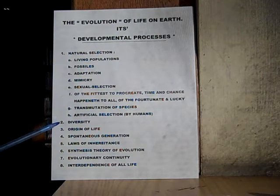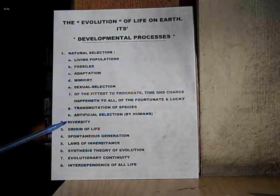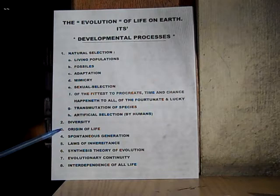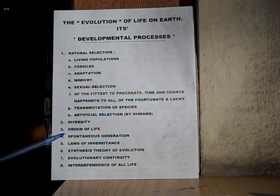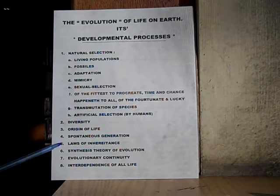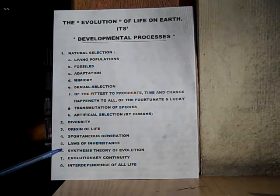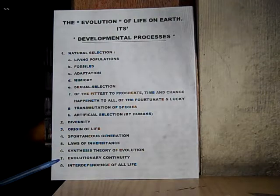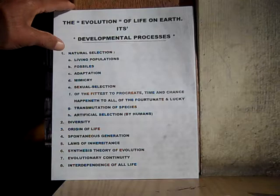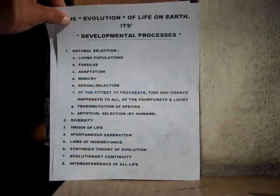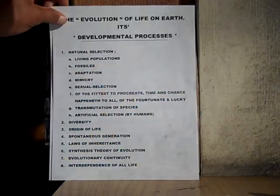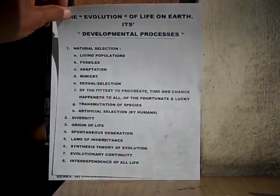Number two: diversity of life. Three: origins of life. Number four: spontaneous generation. Five: laws of inheritance. Six: synthesis theory of evolution. Number seven: evolutionary continuity. And number eight at the bottom is interdependence — interdependence of all life.